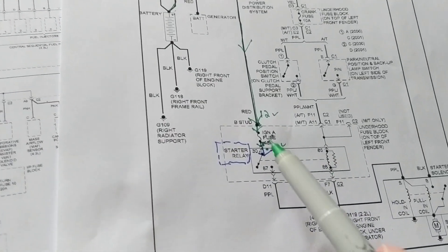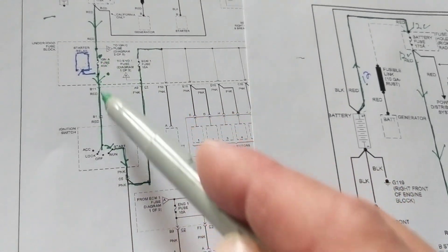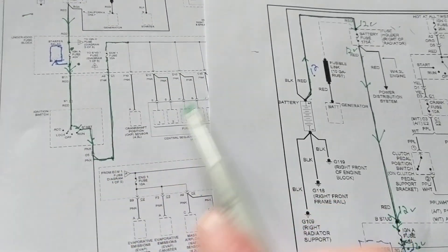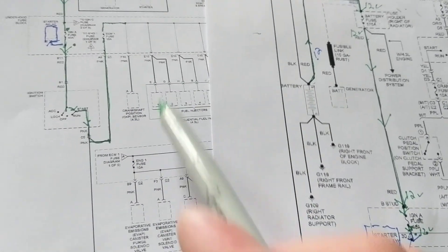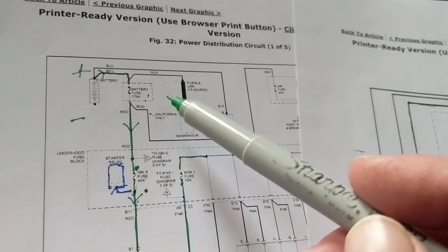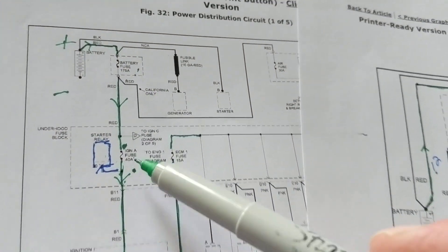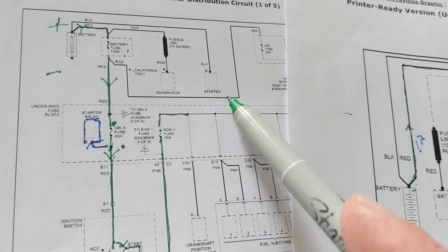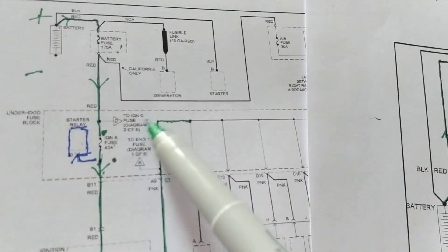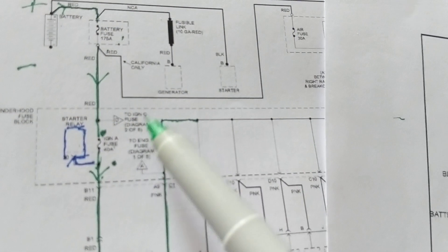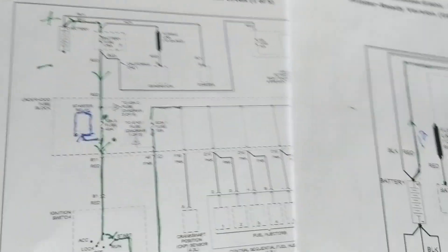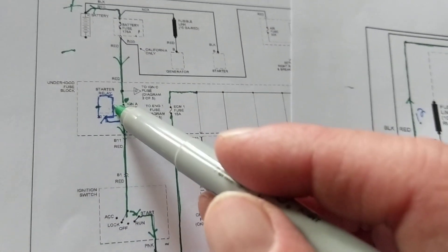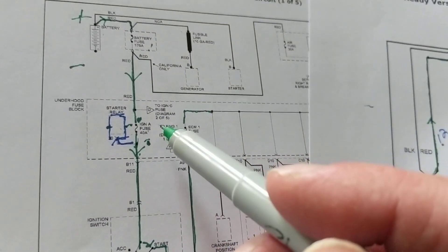The output of the Ignition A fuse goes to the starter relay. On the block diagram the relay appears as a block rather than showing individual terminals like the control side and load side. The output of the relay goes to the ignition switch, then to various sensors and fuel injectors. So we went from 175 amps down to 40 amps because the other current goes to other circuits — the starter relay circuit requires 40 amps or less.